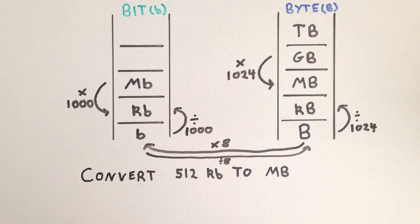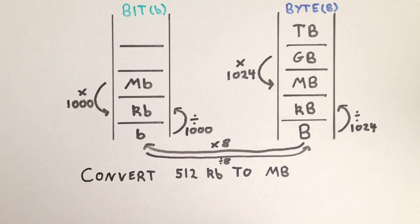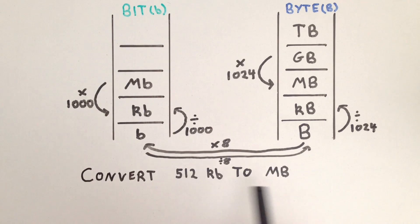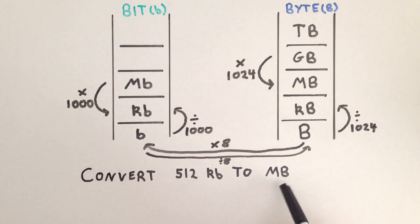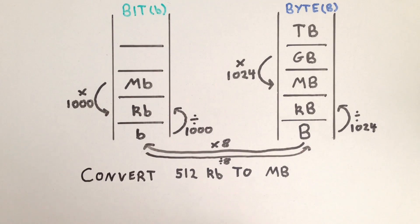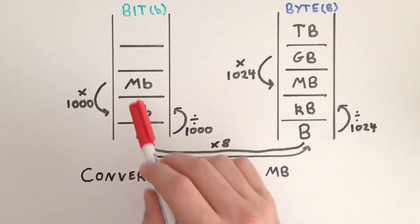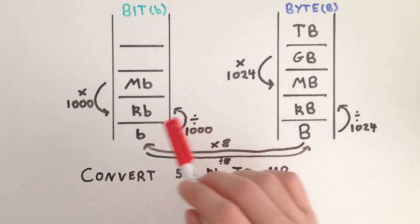Let's do some examples using the ladder analogy that we learnt in the previous video. So convert 512 kilobits to megabytes. Remember small b is bit, capital B is byte. So the first thing we need to do is determine where we are and where we need to go to.